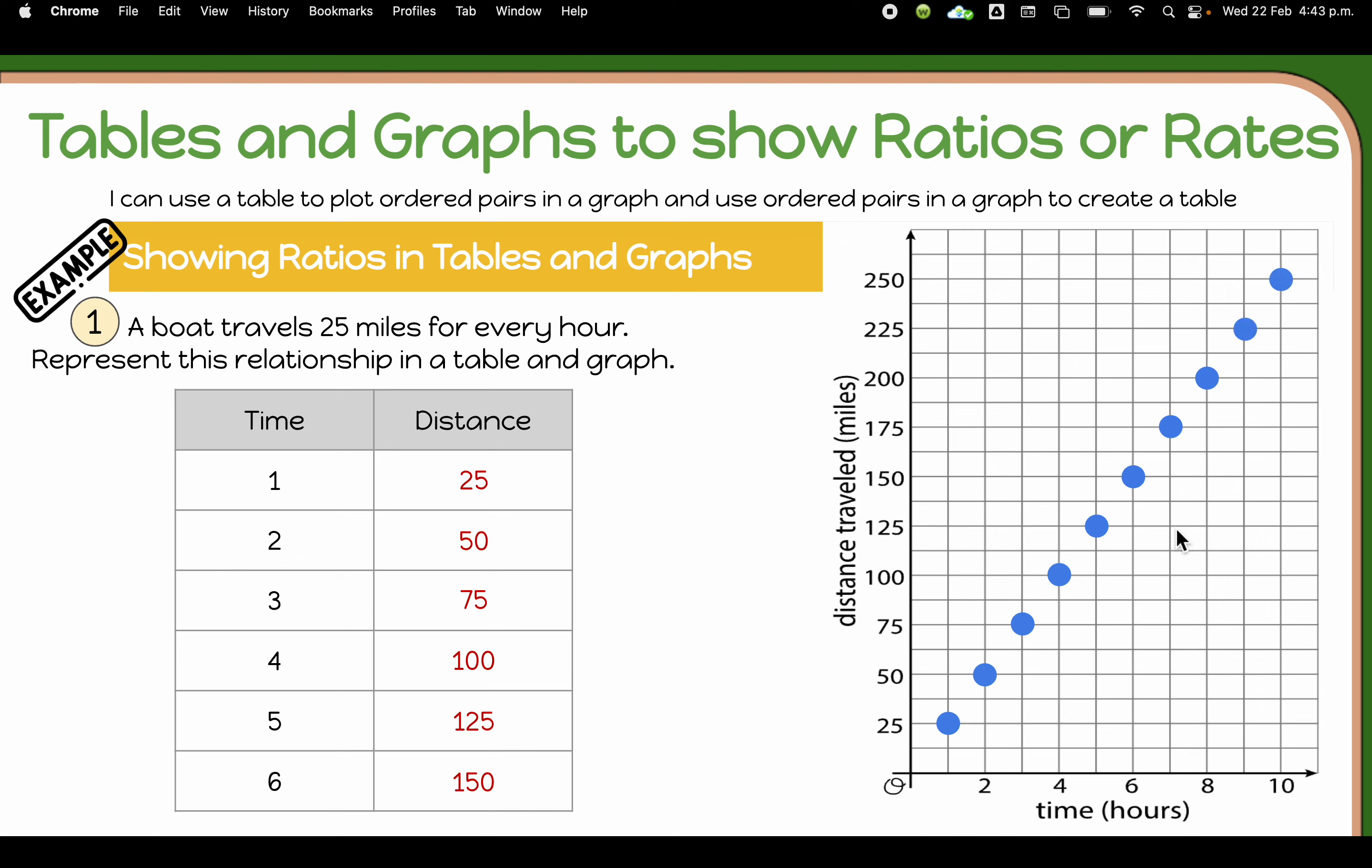So hopefully we're noticing here that the points that we see or the ordered pairs that we see in this graph are in a straight line. We can see that pattern. So the rates or ratios that we are going to be plotting, they should be in a straight line.